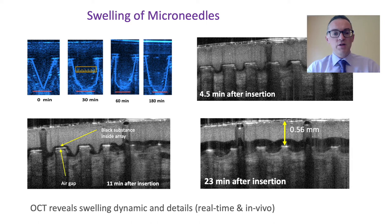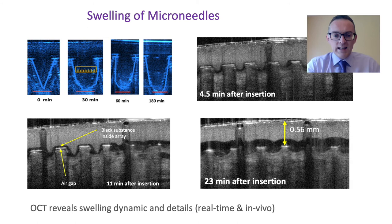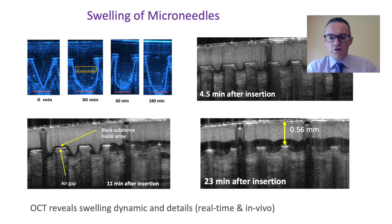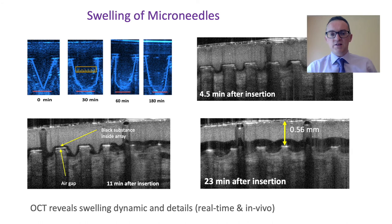In this set of images, the blue images show the microneedles as they swell over time in skin. We are able to measure swelling and dimensional changes in real time in human skin in vivo, gaining an appreciation of how quickly the microneedles take up fluid, how quickly they swell, and the dimensional changes that occur. The optical coherence tomography micrographs shown in gray show the microneedles actually swelling in the skin, with various measurements that are critically important.